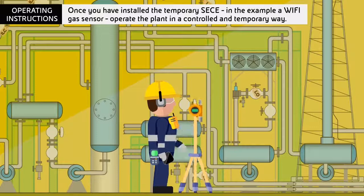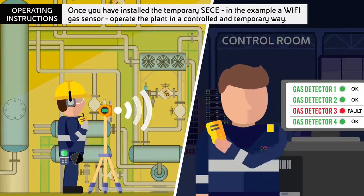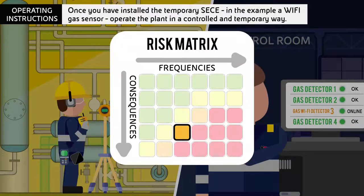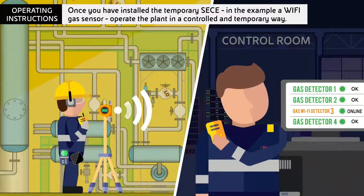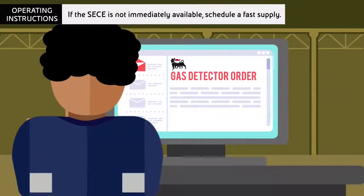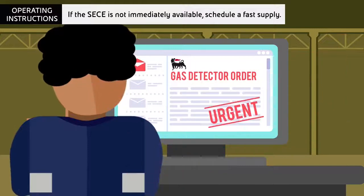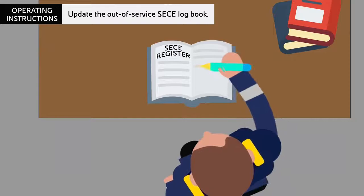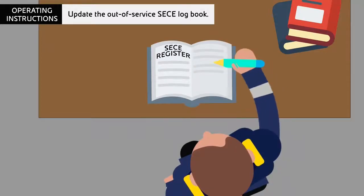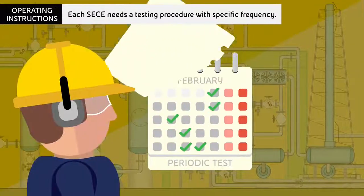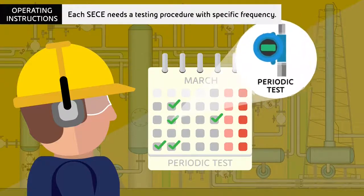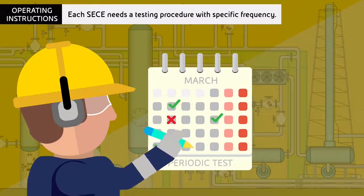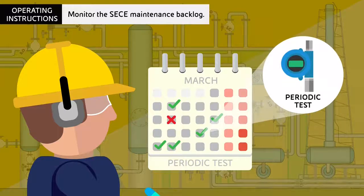Once you have installed the temporary CC — in the example, a Wi-Fi gas sensor — operate the plant in a controlled and temporary way. If the CC is not immediately available, schedule a fast supply. Update the out-of-service CC logbook. Remember that each CC needs a testing procedure with a specific frequency. Monitor the CC maintenance backlog.